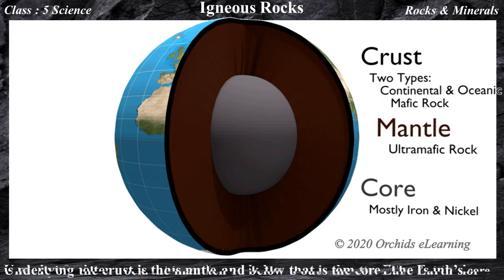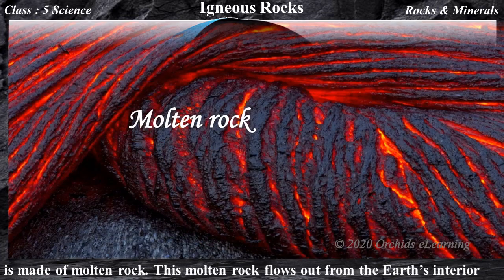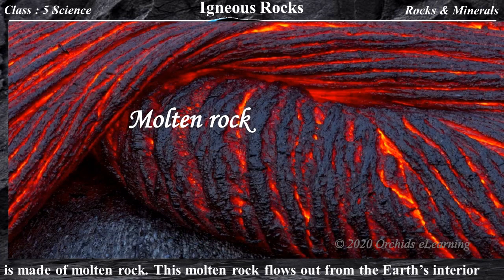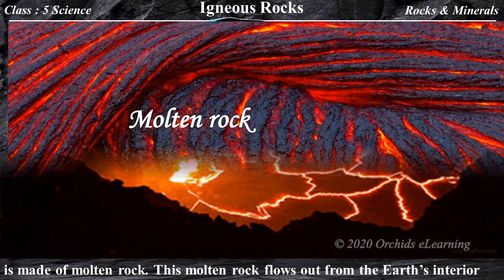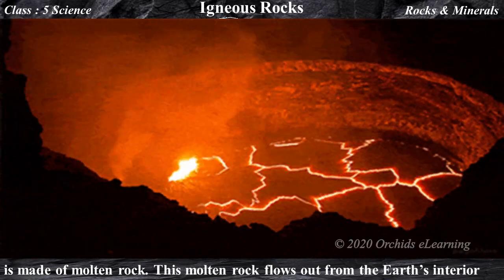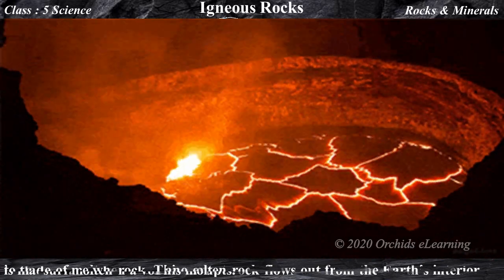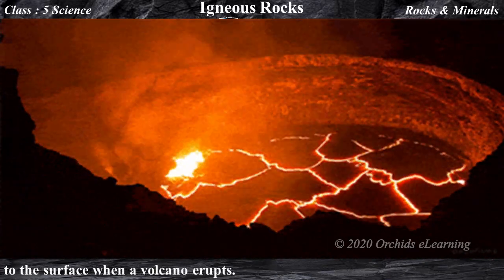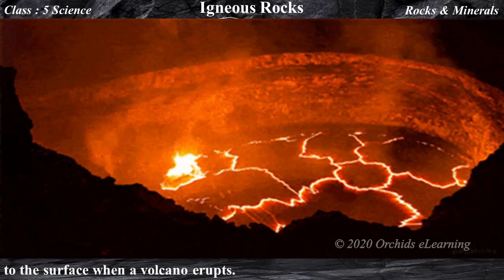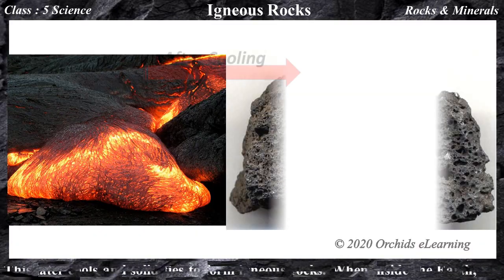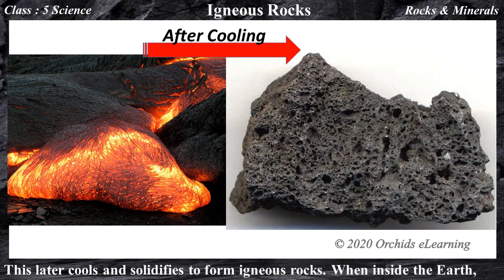The earth's core is made of molten rock. This molten rock flows out from the earth's interior to the surface when a volcano erupts. This lava then cools and solidifies to form igneous rocks.